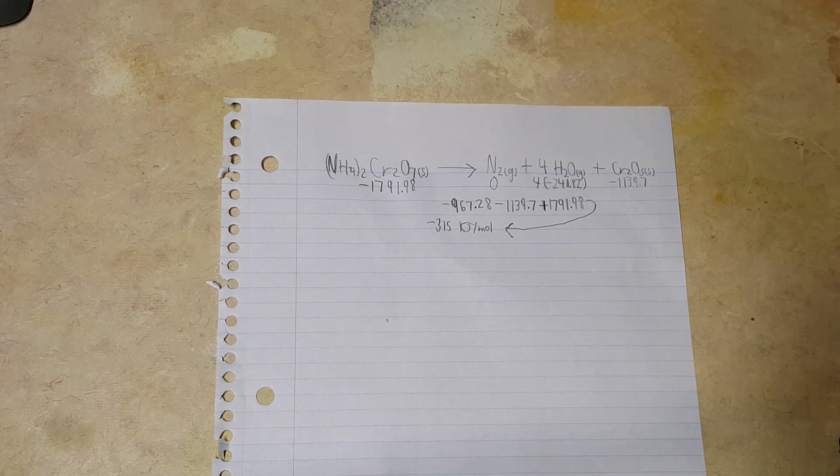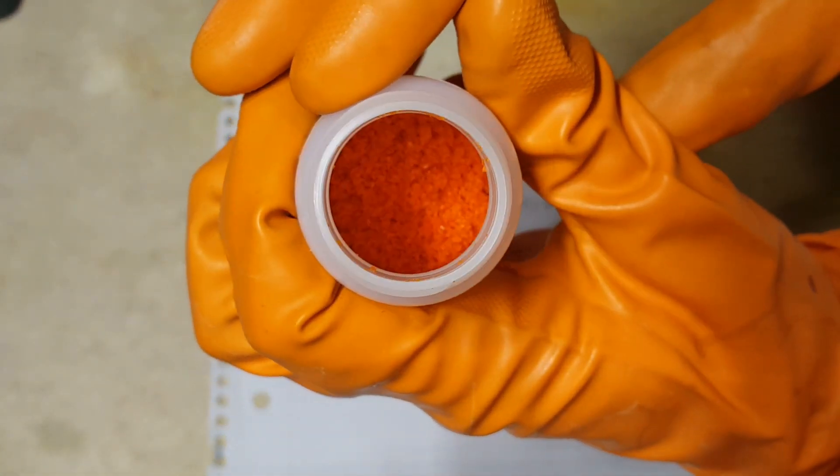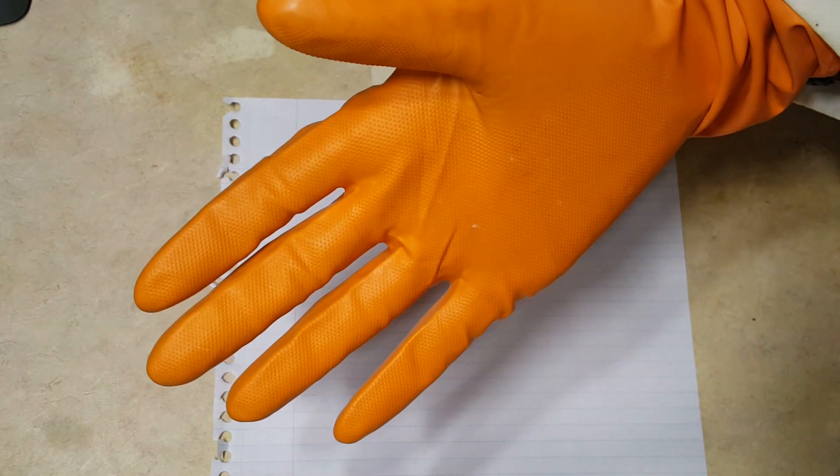Let me show you the ammonium dichromate. It is this orange salt right here. Now a few things about safety before we actually start the reaction: ammonium dichromate is toxic and carcinogenic, so you're going to want to wear gloves when you're handling it.